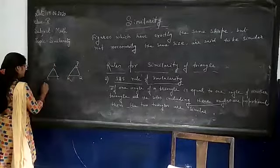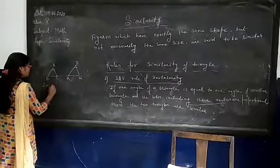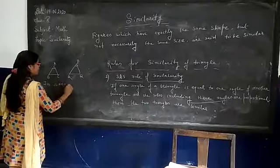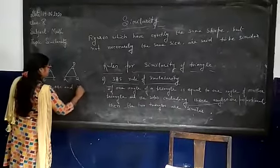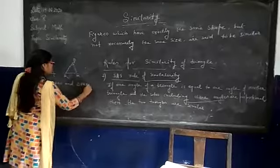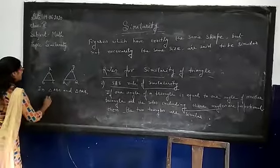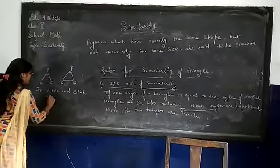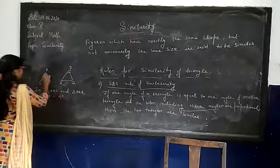Now we take in the adjoining figure triangle ABC and triangle PQR. Now we can write here angle A is equal to angle P.